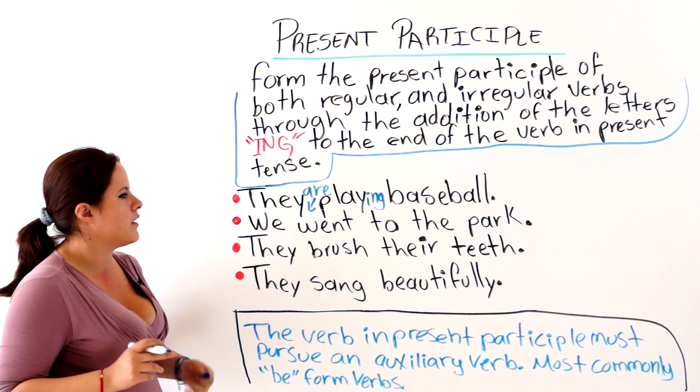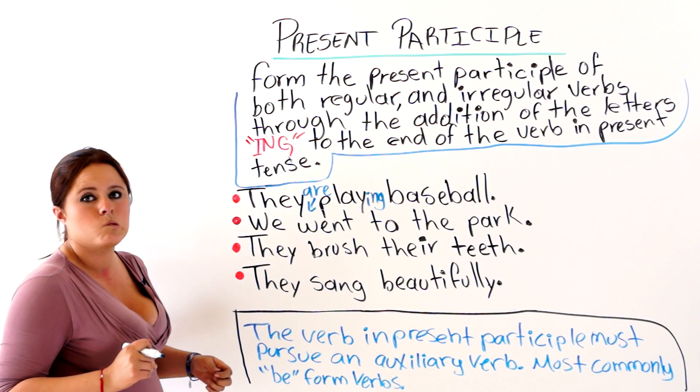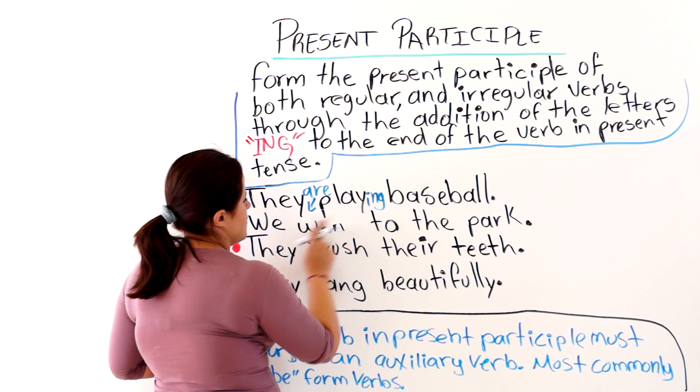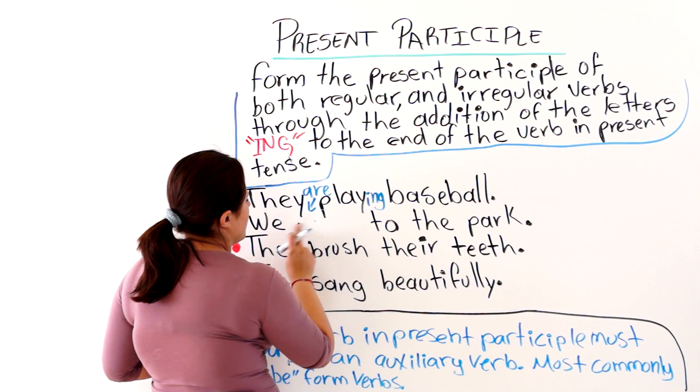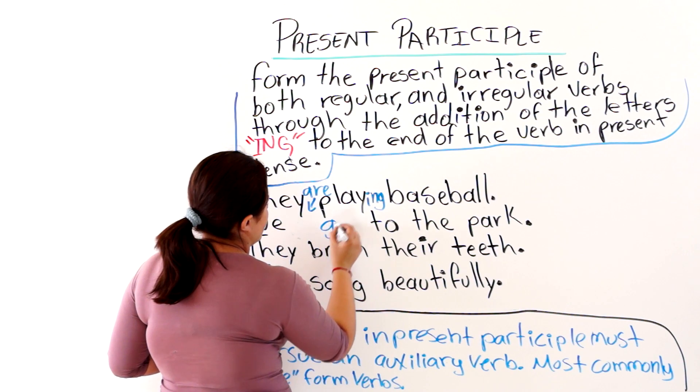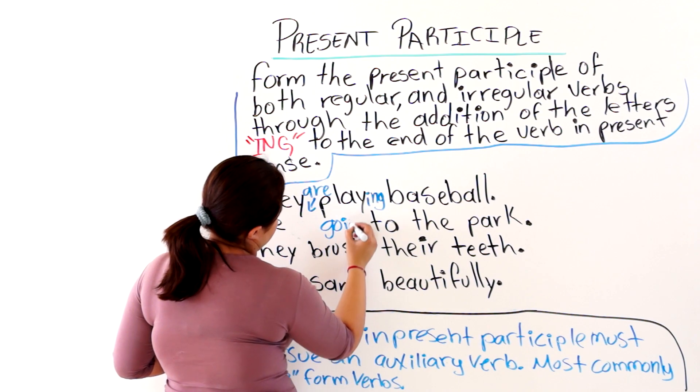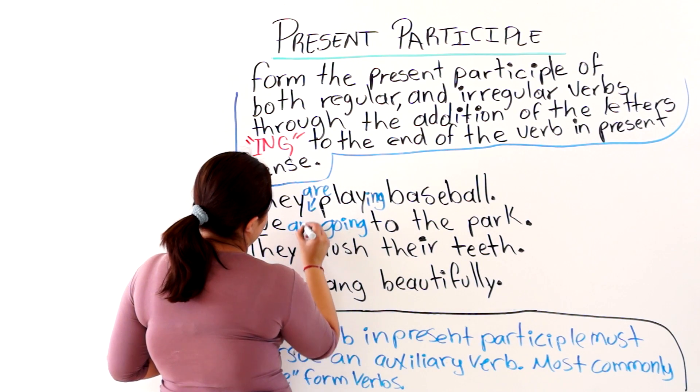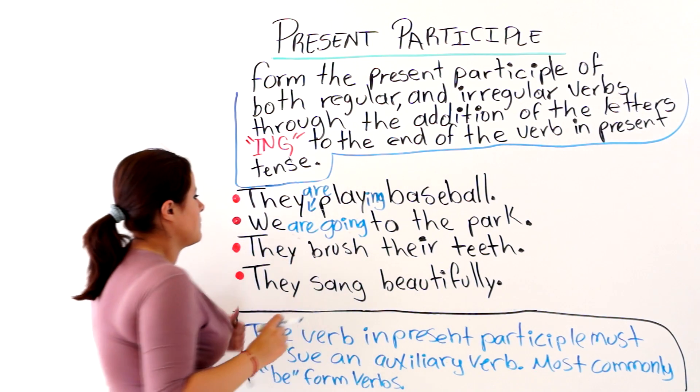The next one says, we went to the park. We went to the park. This is in the past tense. So, we are going to change the whole verb. And we are going to use the present tense plus ing and the corresponding form of the verb be.